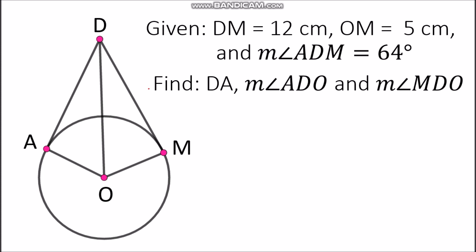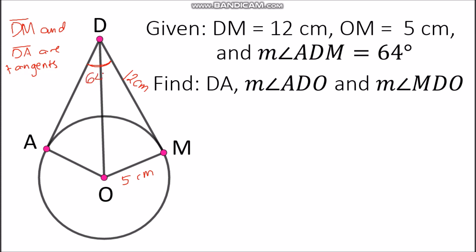Now let's apply the theorem to find specific measurements. We have circle O, where segment DM and segment DA are tangents coming from external point D. We know that DM is 12 cm, segment OM is 5 cm, and the measurement of angle ADM is 64 degrees.